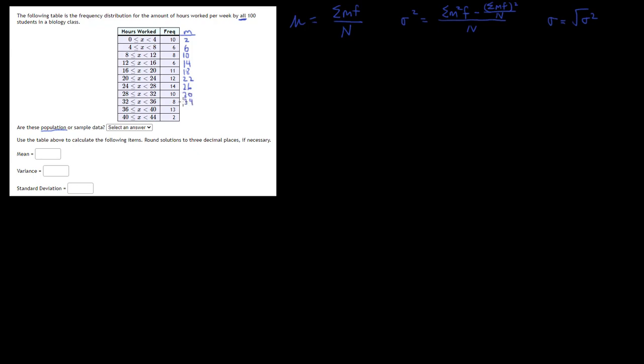Add 4 again you get 38. Then the last one, you add 4 again, you get 42. But again, if you want to do it by a formula, you would do 40 plus 44 would be 84 divided by 2 gives you 42. So there are our midpoints.